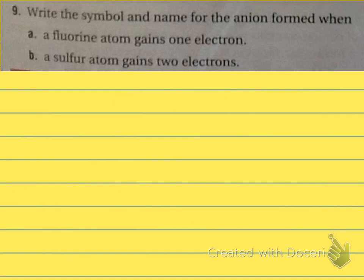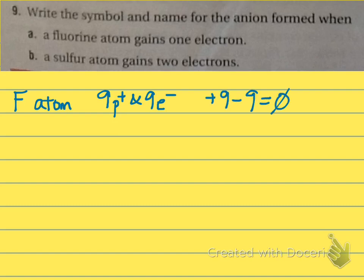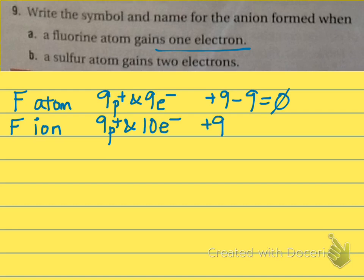Number nine: write the symbol and name for the anion formed when — letter A — a fluorine atom gains one electron. Fluorine has atomic number 9, so 9 protons and 9 electrons, charge of zero. As an ion, it still has 9 protons but gains one electron, giving 10 electrons. Plus 9 minus 10 gives a charge of negative 1, so this is F with a negative 1 charge. To name anions, we take the element name, drop its ending, and add "-ide" — so this is fluoride.